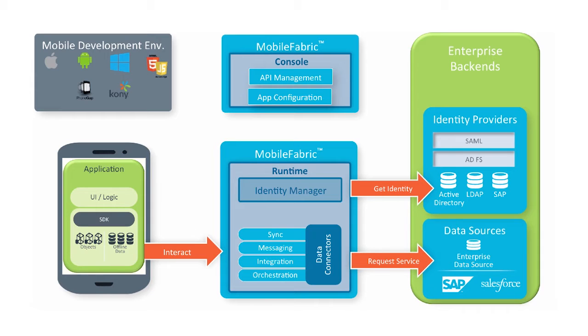This is where Mobile Fabric comes in. Mobile Fabric allows you to create new, mobile-optimized APIs exposed to mobile devices as secure, RESTful JSON services using existing enterprise back-end systems and data.